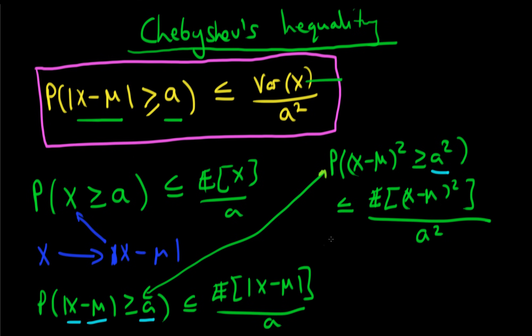But in fact, the numerator of this function is in fact what the definition of the variance is. It's the expected value of x minus μ all squared is how we define the variance. So the top is just the variance of x.